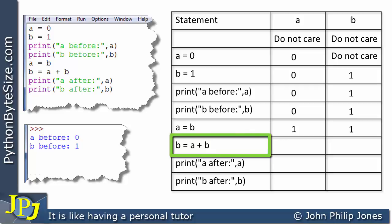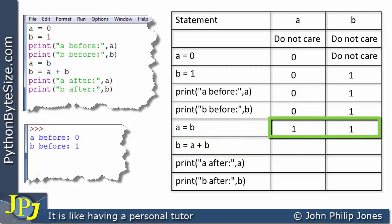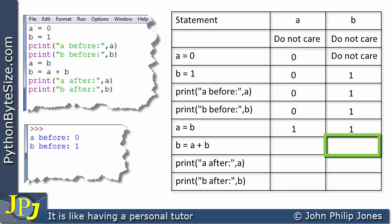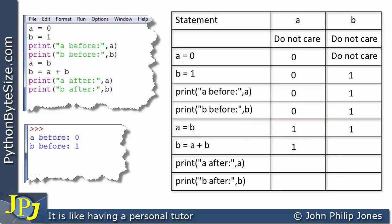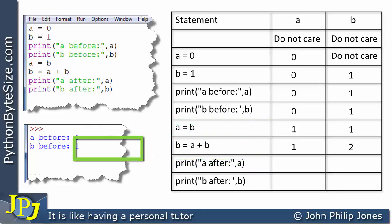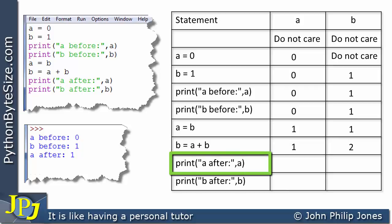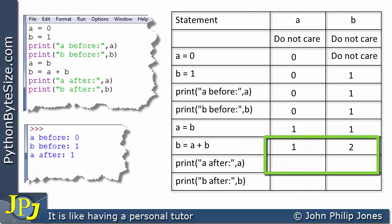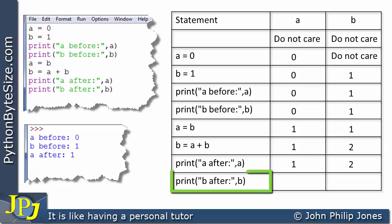Now we come to B is assigned A plus B. Currently A is 1 and B is 1, so we add them to get 2. Before placing 2 in the B column, we ask what happens to A with this statement — nothing, so we copy that 1 down. B is now 2. We then print the value of A after these two lines have executed — A after is 1. The print statement doesn't affect A or B, so we copy the 1 and 2 down.